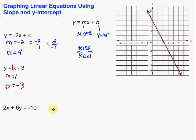Now I can use those two things to graph my line. We come over here and start at the y-intercept, which is negative 3. So I go on the y-axis and go down to negative 3 — my first point is right here at negative 3. Then I use my slope. Write it as a fraction so we can do rise over run. 1 as a fraction would be 1 over 1. So I go to my y-intercept, rise 1, and then run 1. Rise 1, run 1, that gets me to right here. Again, rise 1, run 1, that puts me right there. Rise 1, run 1, and again.